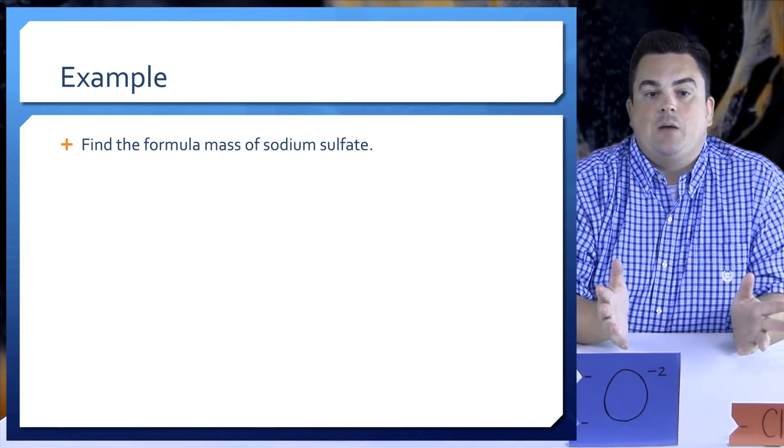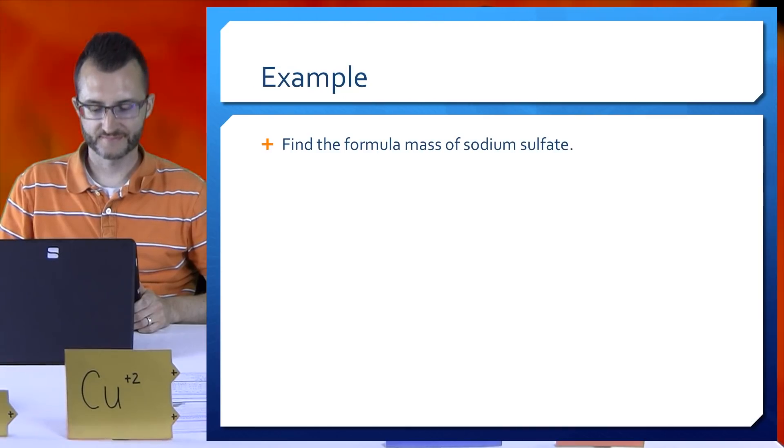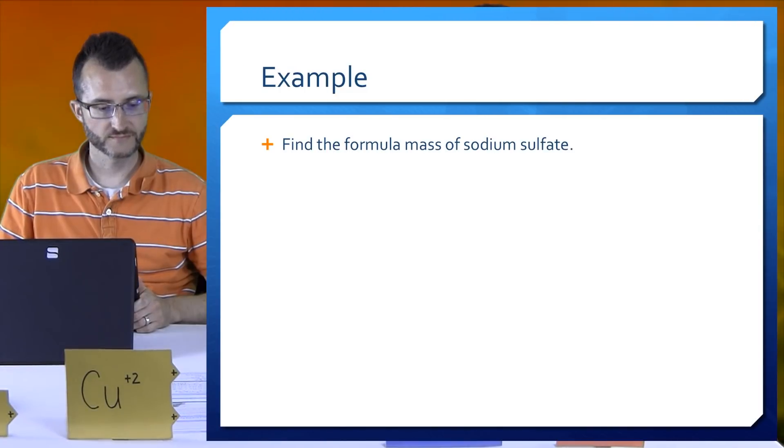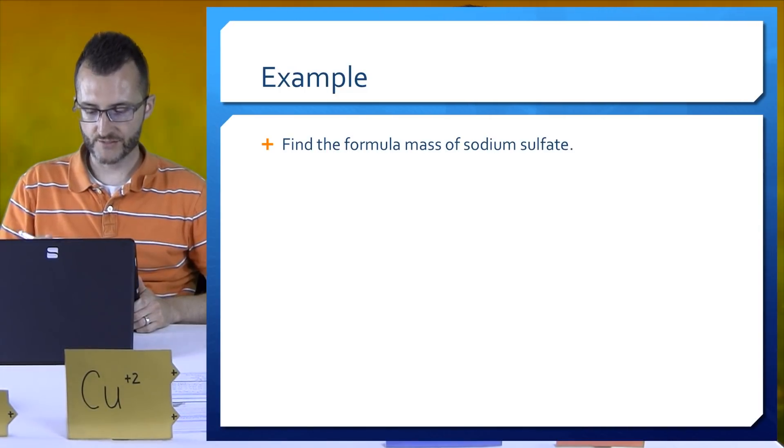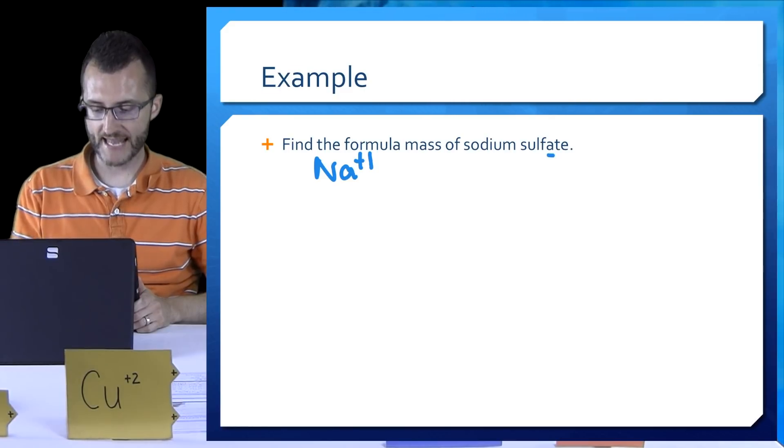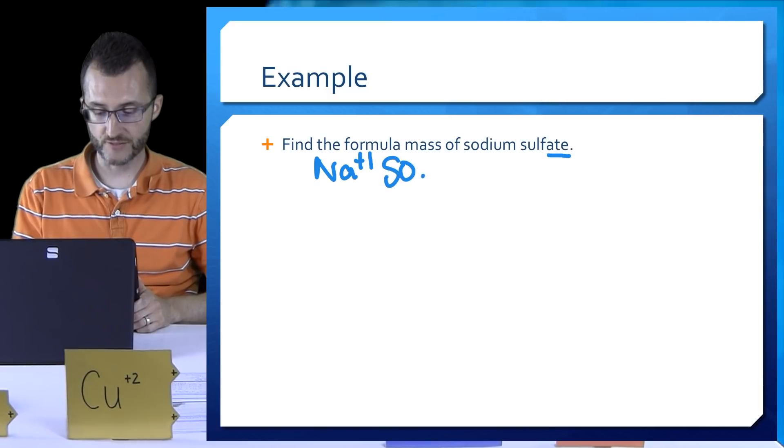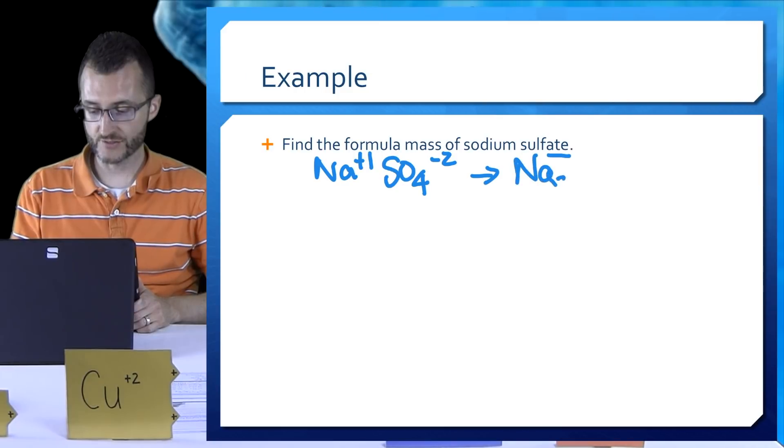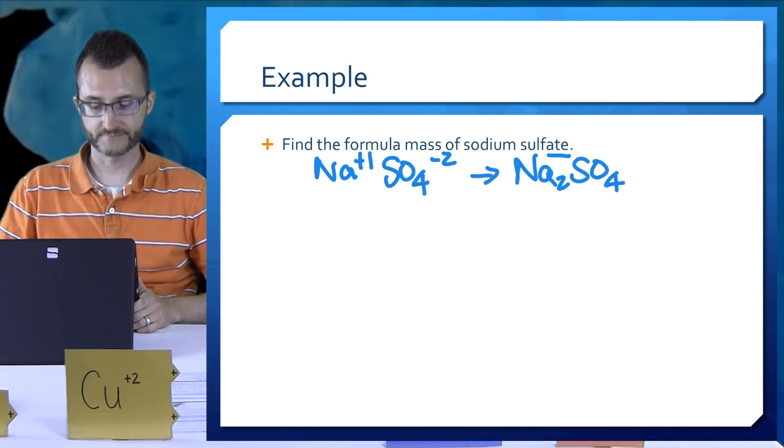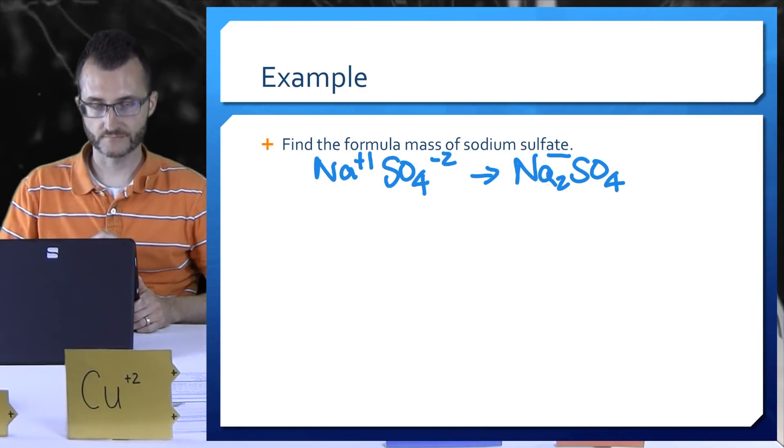All right ladies and gentlemen we're going to do an example here of how to calculate formula mass. We're going to find the formula mass of sodium sulfate. We have a name, we need a formula so let's get that first. Sodium is Na and it's in group one, it has only one oxidation state plus one. Sulfate with its ending is a polyatomic ion that is on table E. It's SO4 minus two and when I put those together I get Na2SO4.